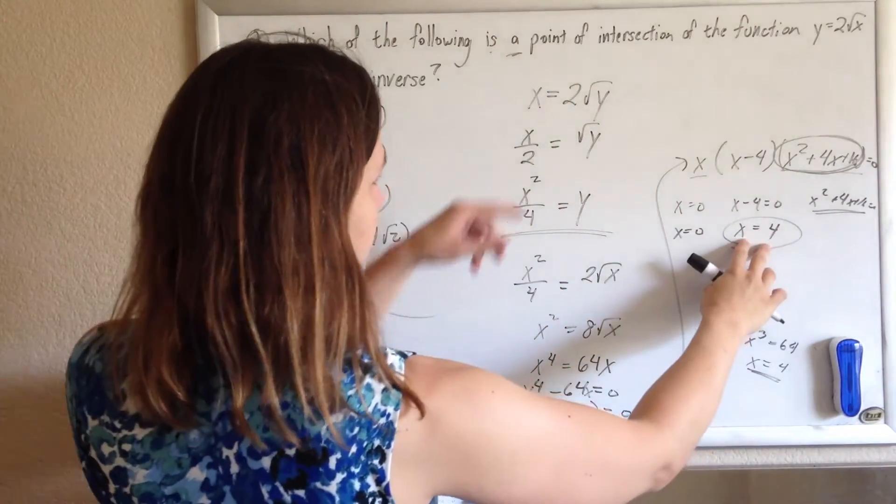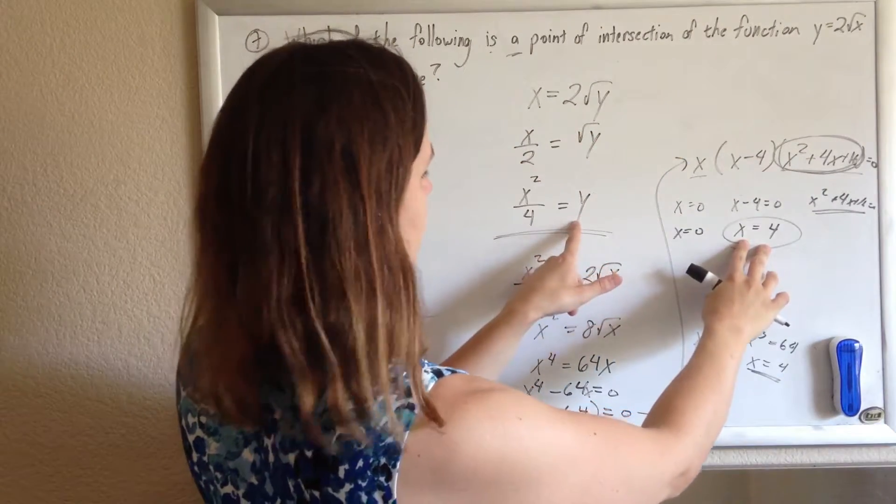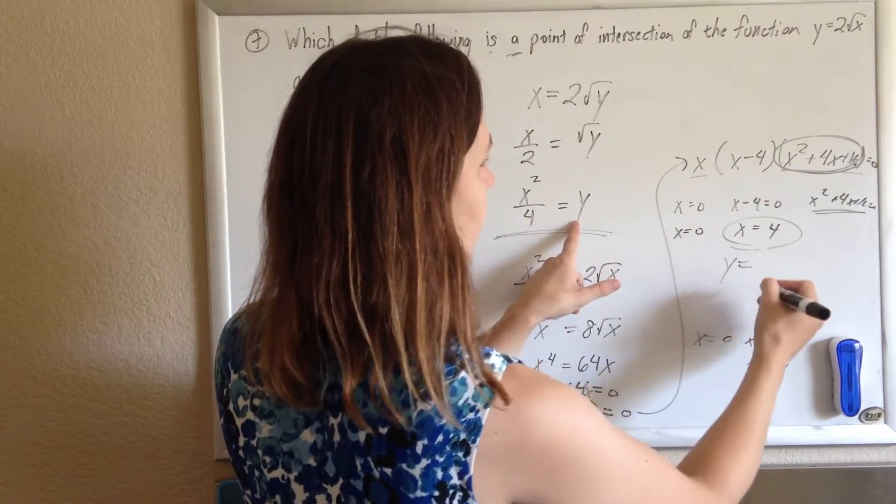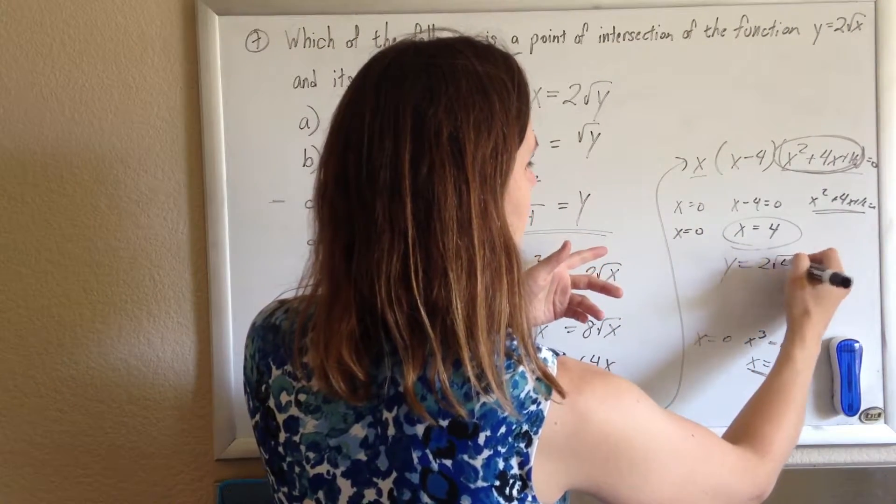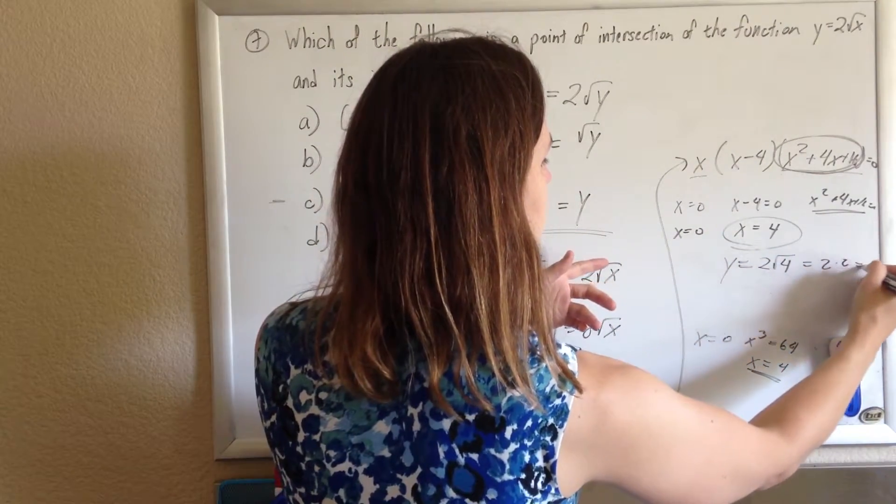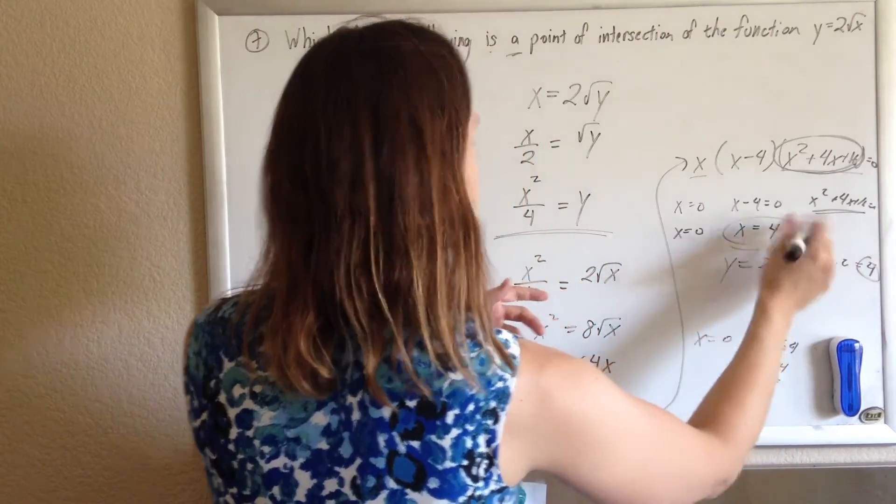So, x is 4. Just plug that back into either of these y's to get the other coordinate. And so, you'll get 2 root 4. So, 2 times 2 is 4. And you get (4, 4).